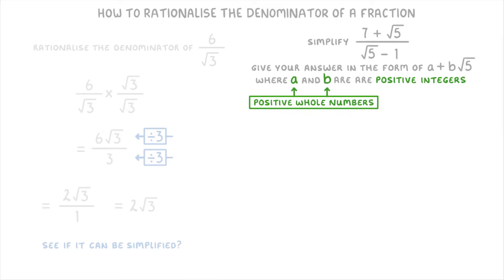So the first step is to take our whole fraction and multiply it by root 5 plus 1 over root 5 plus 1. Because this is the same as our original denominator, but we've changed the minus sign to a plus sign.